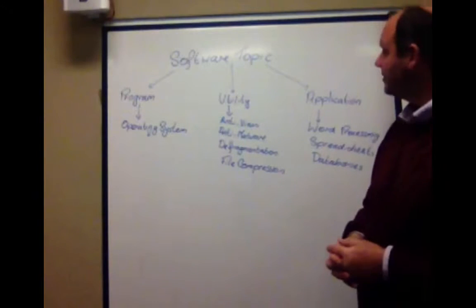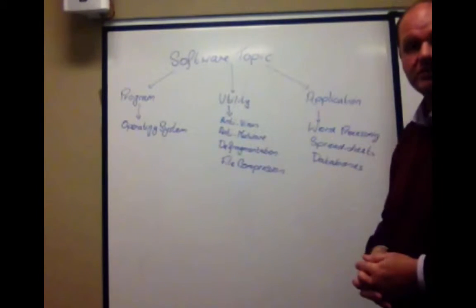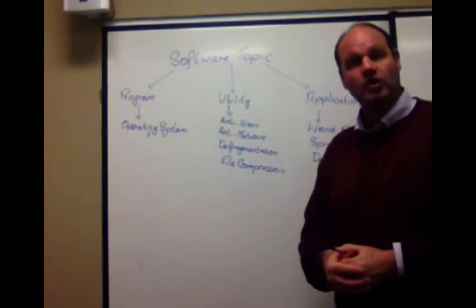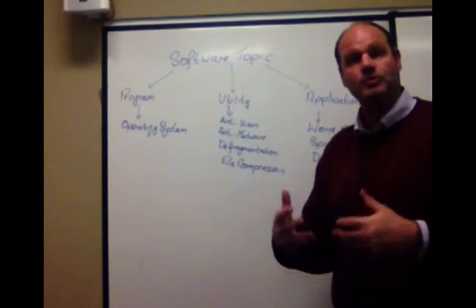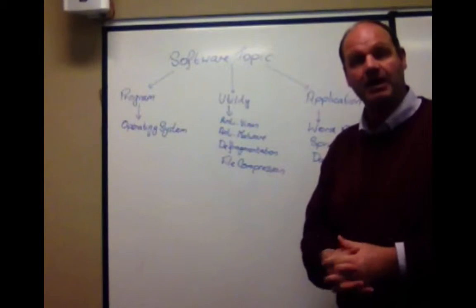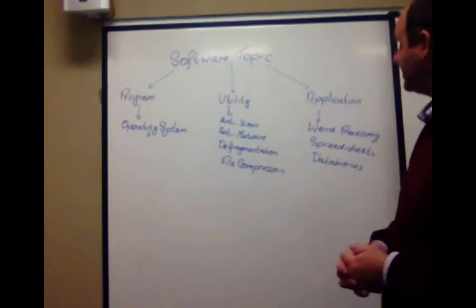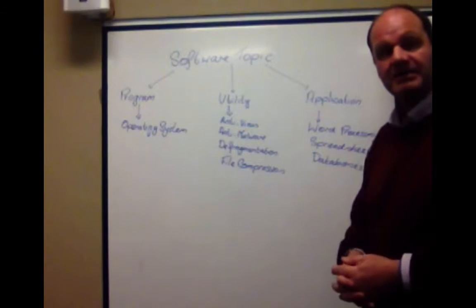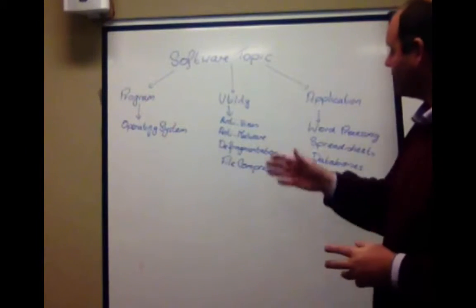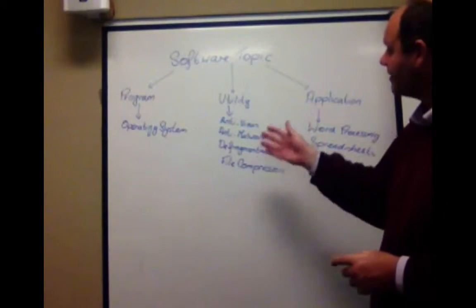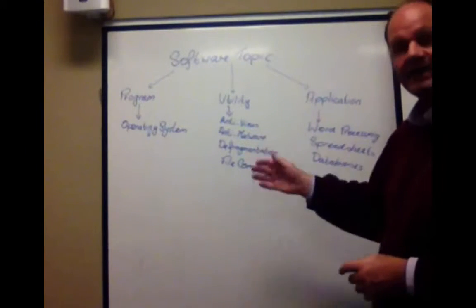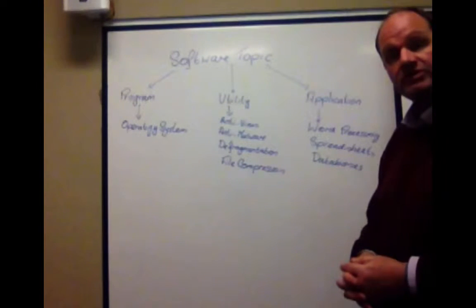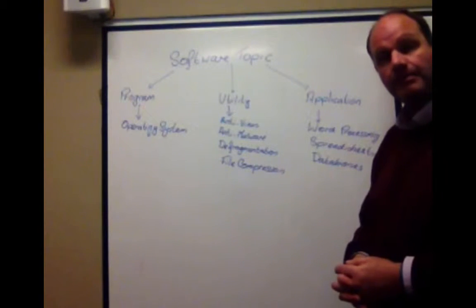Then we looked at utility software. Utility software's job is to maintain our computer, and we've looked at these types of utility software: antivirus, anti-malware, defragmentation, and file compression.